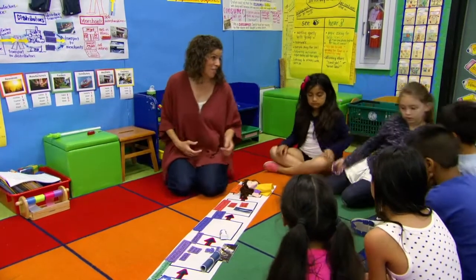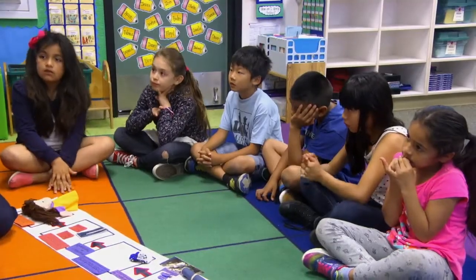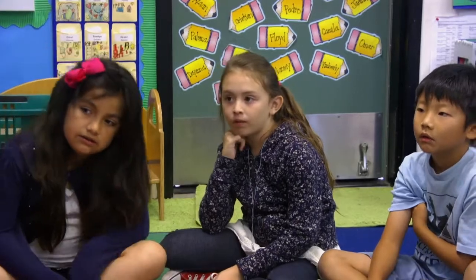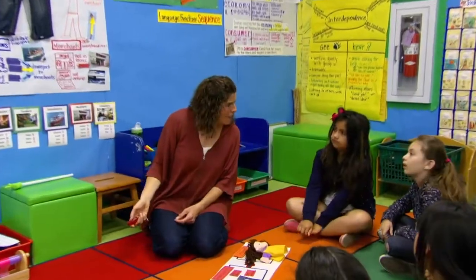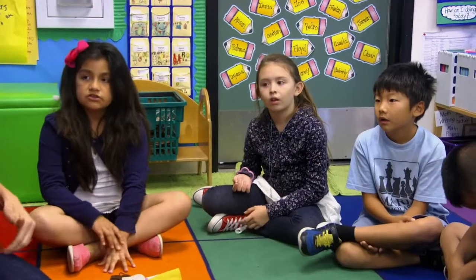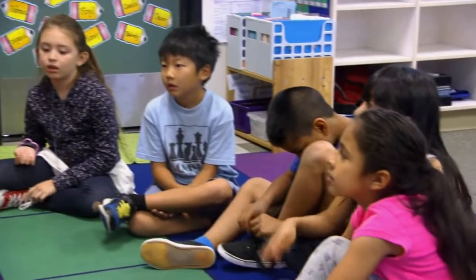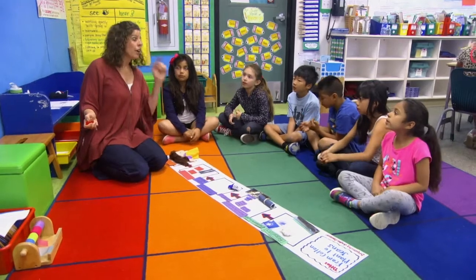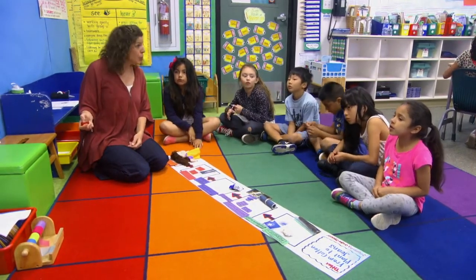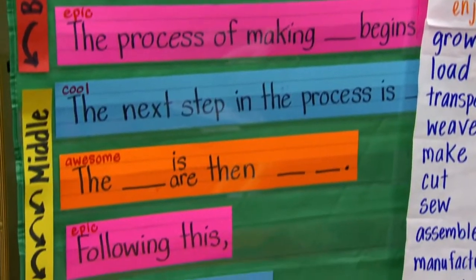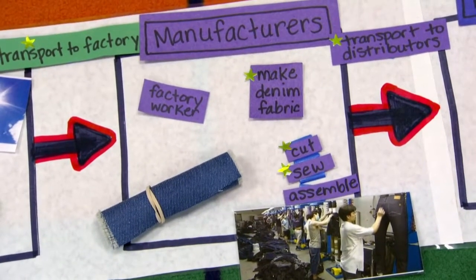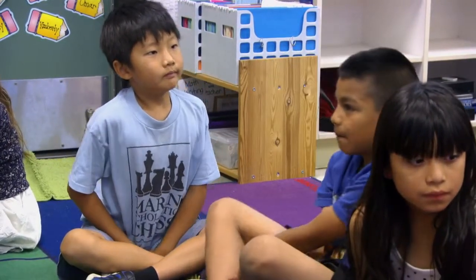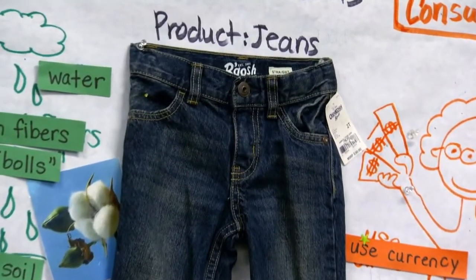I want us now to practice telling the story of this exact pair of jeans. It didn't get made today — it got made some time ago — so we're going to need to use verbs that tell about things that happen in the past. When she was with just the emerging and expanding students, she really dove into past tense verbs. So while the farmers grow the cotton, what if it happened the other day or last year? They grew — the farmers grew the cotton. They had sentence frames, the drawn label with real images, and the support of their friends through think-pair-shares.